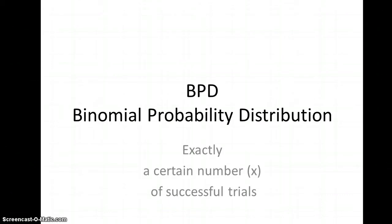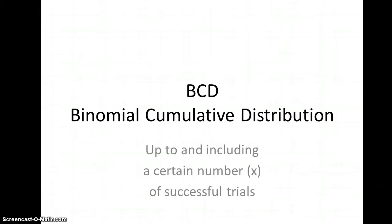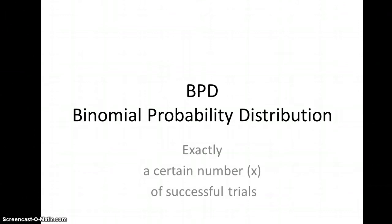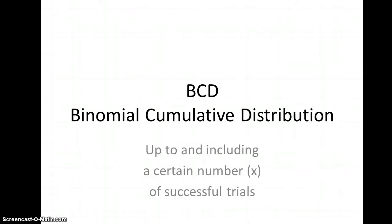You've got the BPD and the BCD. So with the BPD, we're looking up an exact number of successful trials. And with the BCD, we're looking up to and including a certain number of successful trials.